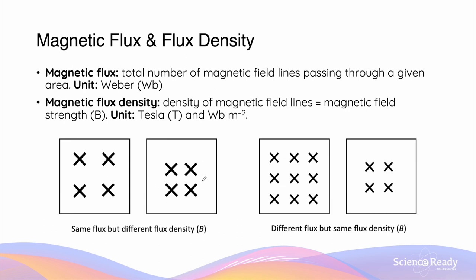Whereas in the second square, this has a higher density because the field lines are closer together. So these two areas, although they experience the same flux, they actually have different flux densities.